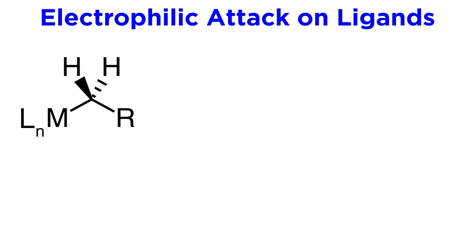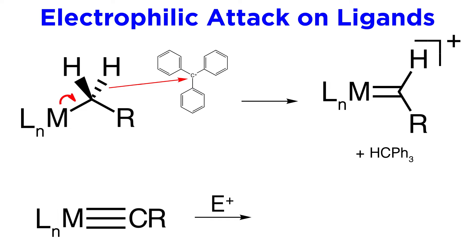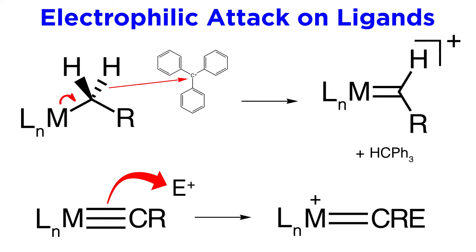Let's also take a look at electrophilic attack on ligands. Take for example this metal complex with an alkyl ligand. If introduced to this trityl cation, the metal atom can push electrons onto this carbon, forming a pi bond, which will cause a hydride to attack the trityl cation to reduce it. This will result in a positive charge on the metal complex. We can also see how metal-ligand pi bonds can interact with electrophiles. For example, here is a metal with a triple bond to this alkylidyne. One of these pi bonds can interact with an electrophile, most commonly a proton, leaving this alkylidyne ligand and a positive charge on the complex.